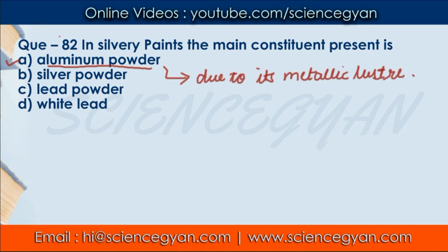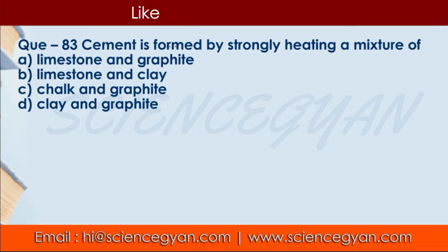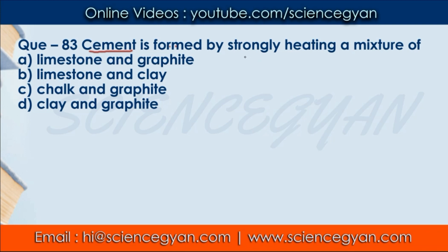Question number 83: Cement is formed by strongly heating a mixture of — four options are given. The correct answer is B — limestone and clay. Limestone is chuna patthar and clay is mitti. When limestone is mixed with clay and strongly heated, cement is formed. So B is the correct answer.